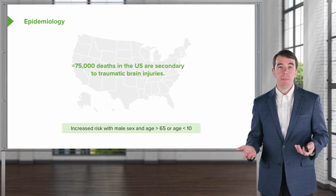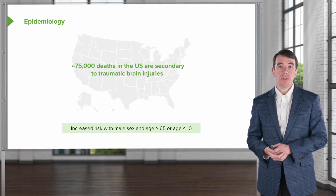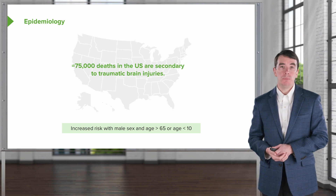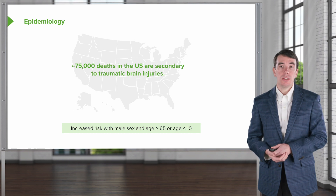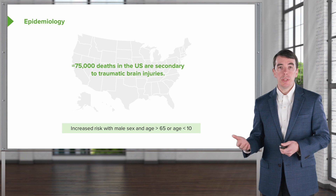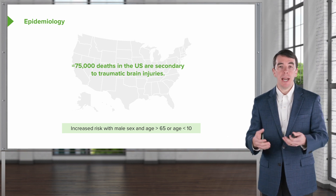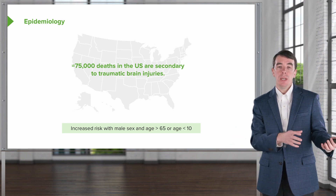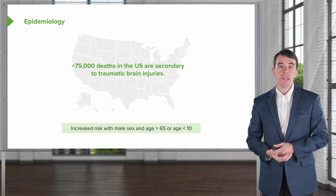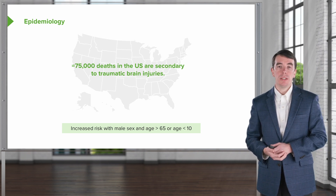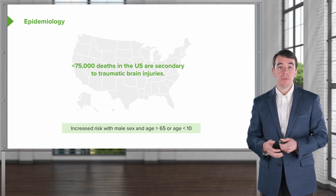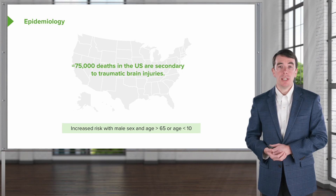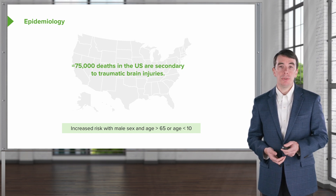In terms of epidemiology, brain injuries are extremely common, with greater than 75,000 deaths in the United States secondary to traumatic brain injuries each year. There's an increased risk in men, and there's a bimodal distribution. We see this in young children, likely related to falls, trauma, and sports-related injuries, and then increasing incidence in the elderly as a result of falls.